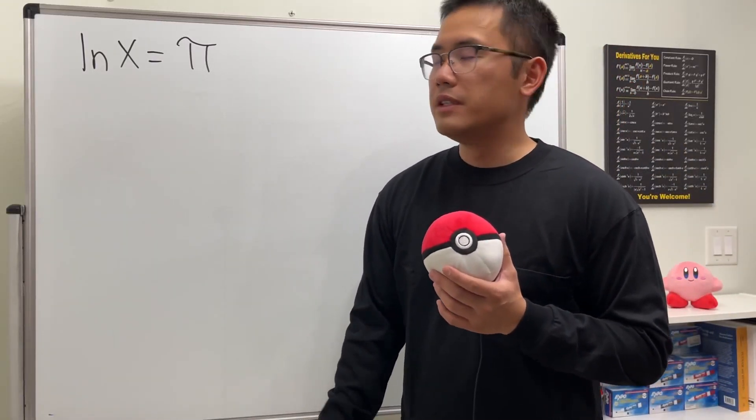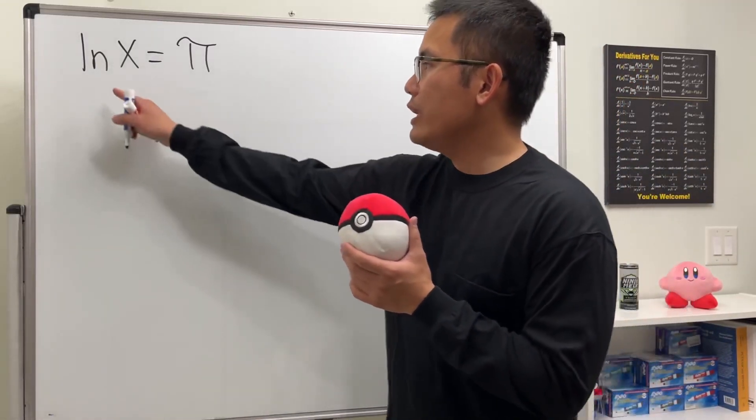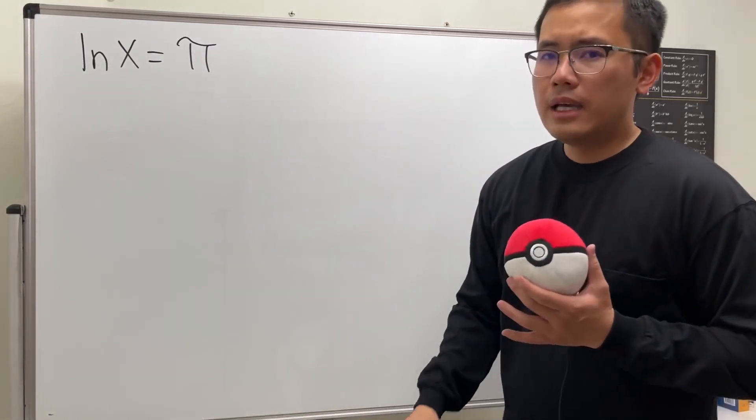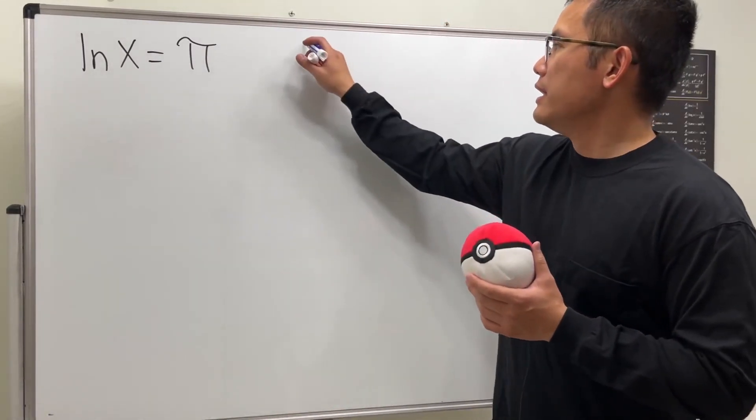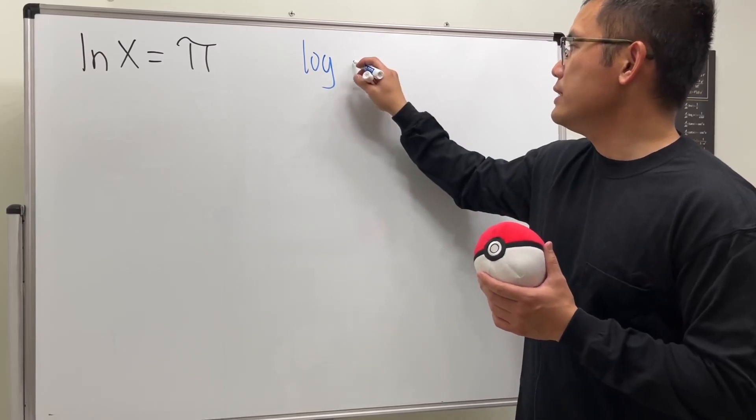So let's take a look at how we can solve this logarithmic equation. Here we have ln x is equal to π. And let me go over the steps for you guys first. This is to solve log equations.